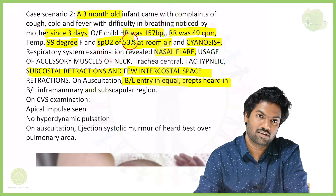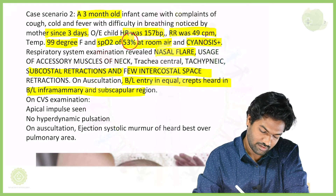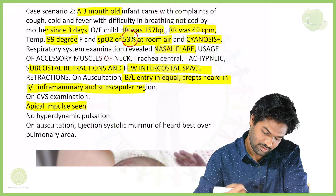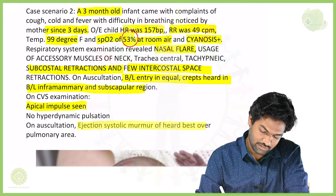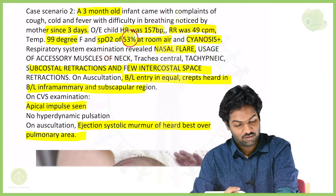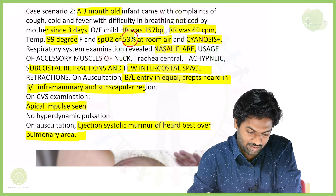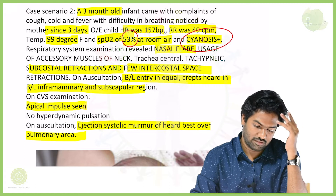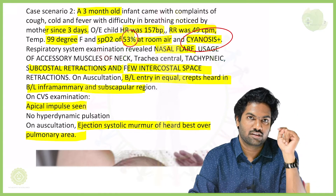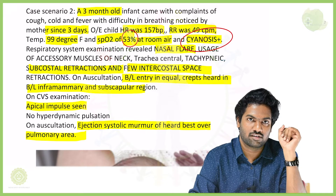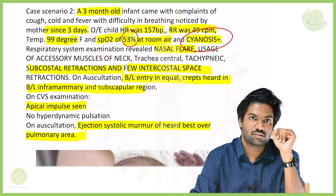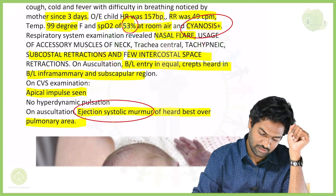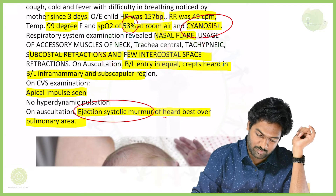Crepts were heard, not as significant, bilaterally in the inframammary and subscapular regions. On CVS examination, apical impulse was seen, no hyperdynamic pulsation. On auscultation, an ejection systolic murmur was heard, better heard over the pulmonary area. Comparing case scenario one and two: case scenario two had cyanosis, and the murmur was ejection systolic heard over the pulmonary area, whereas in case one it was a pan-systolic murmur.